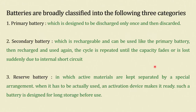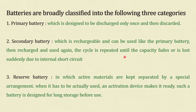Batteries are broadly classified into three categories: primary battery, secondary battery, and reserve battery. A primary battery is designed to be discharged only once — use and throw, they cannot be reused. A secondary battery is rechargeable — it can be used like a primary battery, then recharged and used again and again until the capacity fades or is lost due to internal short circuit.